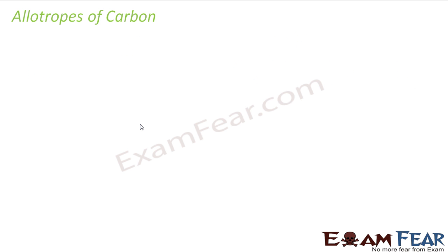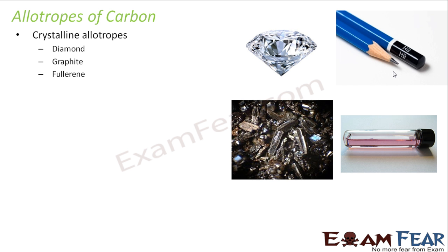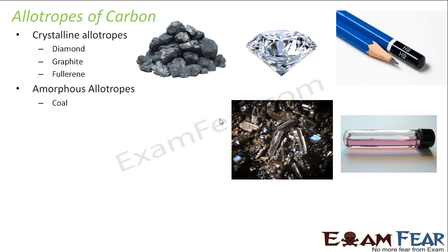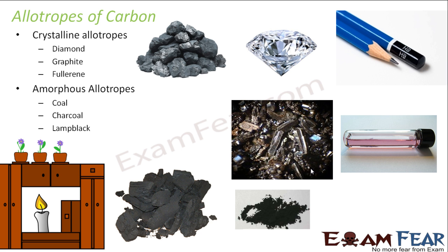There are some allotropes of carbon. One is crystalline and the other is amorphous. For crystalline we have diamond, we have graphite which is used in pencils, and we have fullerene which was recently discovered. For amorphous allotropes we have coal, charcoal which we get by burning wood, and lamp black. Lamp black is a very pure form of carbon obtained by burning kerosene or similar substances.